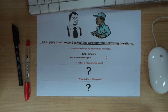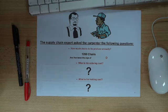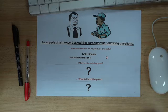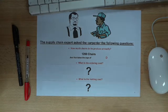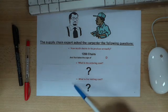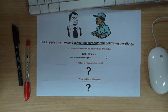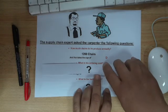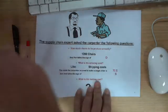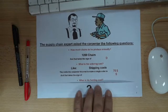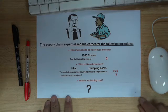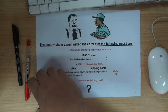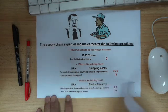The carpenter told the expert that he produces 1,200 chairs a year — this takes the sign D. The carpenter asked what was meant by ordering cost. The expert explained that ordering cost is the cost incurred to make a single order, like shipping cost and many other things. The cost to make a single order is $75, and that takes the sign S.